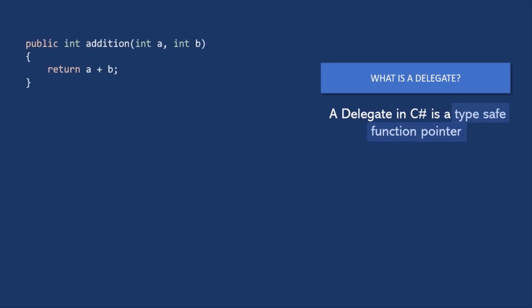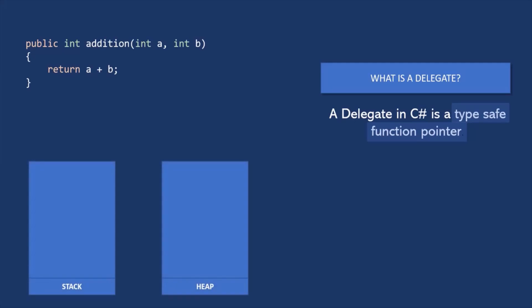Here we are creating a method called addition. For this method, the return type is integer and it takes two parameters of type integer. This method is going to return the sum of those two integers. When we create a method like this in C-Sharp and run the program, in the system's memory, this method will be stored somewhere. Memory can be classified into two types: stack memory and heap memory. In stack memory, all value types are stored, and in heap memory, all reference types are stored. A method in C-Sharp is of reference type, so this addition method's definition will be stored in the heap memory.